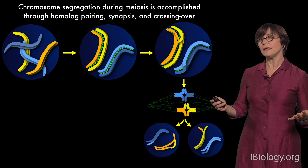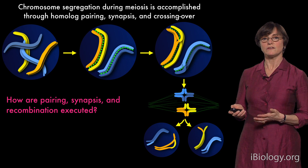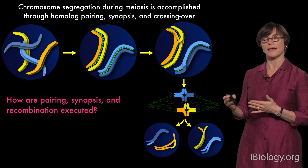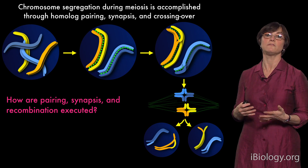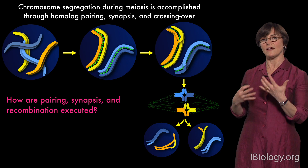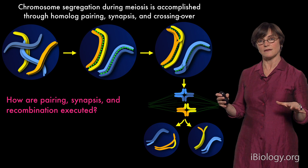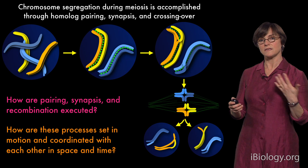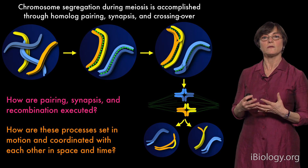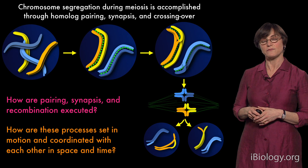We have many open questions in this field. Our lab and many other labs are very interested in understanding how these processes of pairing, synapsis, and recombination are executed and regulated. These are really dynamic processes happening on very different temporal and spatial scales. How are all of these processes coordinated so that they occur in the proper order and as faithfully as possible?